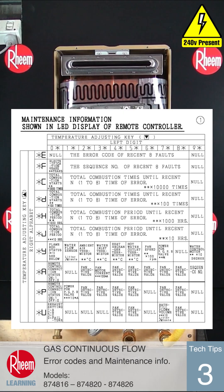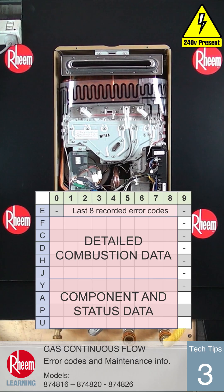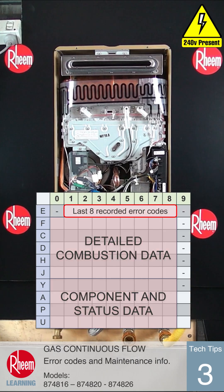This table shows what information is available. Each box within the table holds a piece of data, such as the last eight error codes. The table also has combustion operation data, and the rest of the table gives access to live data from the internal components.